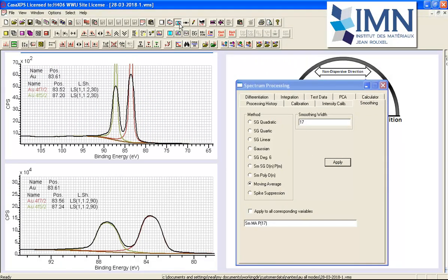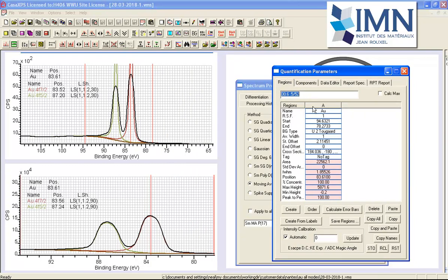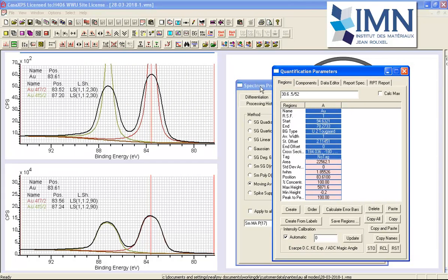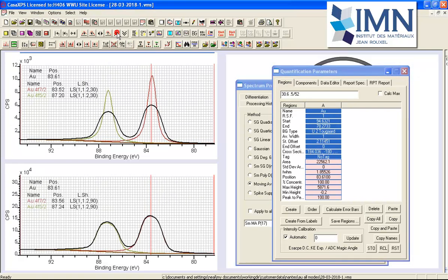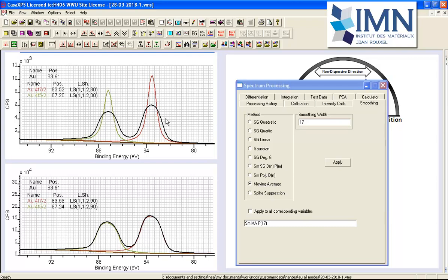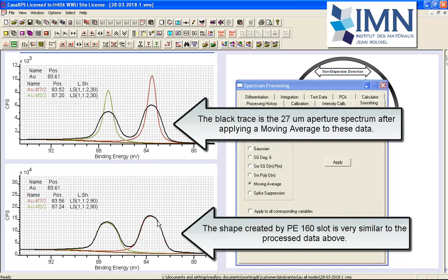So let me just bring up the region property page so I can highlight the data within the energy interval of interest and I will just adjust the intensity. So now you can see that the black trace is the data after smoothing and these were the peaks that were fitted to the data. So as a consequence of smoothing these data using a moving average the data has been transformed so it looks very similar to what you see with pass energy 160 after being analyzed using a slit aperture.